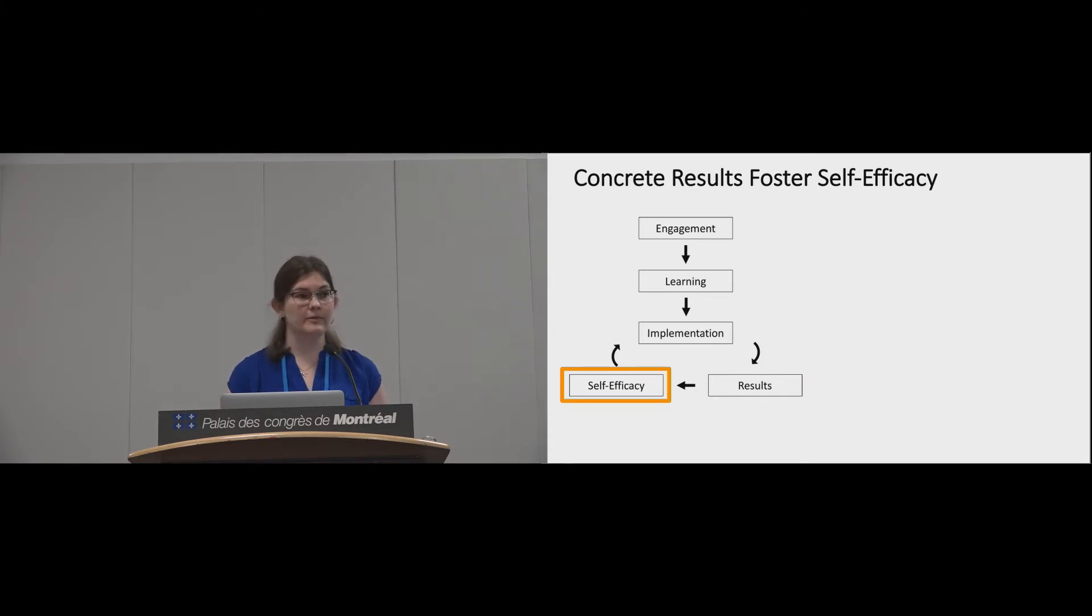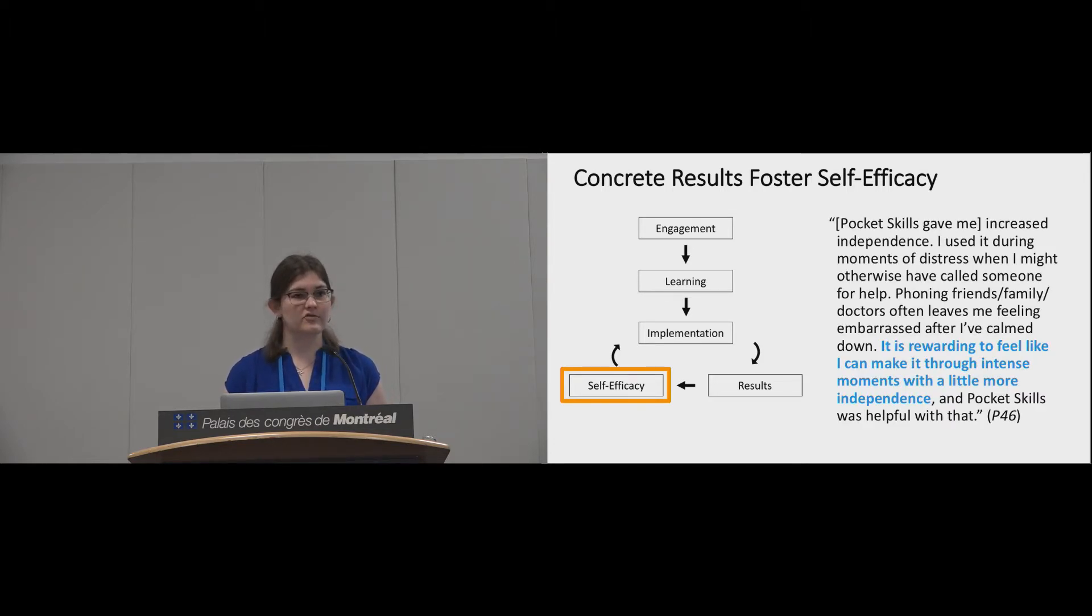One of the reasons that helping people see these results could be so useful is participants reported an increase in self-efficacy after seeing how DBT skills could help them. One participant explained, PocketSkills gave me increased independence. I used it during moments of distress when I might otherwise have called someone for help. Phoning friends, family, or doctors often leaves me feeling embarrassed after I've calmed down. It is rewarding to feel like I can make it through intense moments with a little more independence, and PocketSkills was helpful with that. So because she knew that PocketSkills could help her cope more positively in upsetting situations, this participant ended up feeling more capable of independently managing her distress.